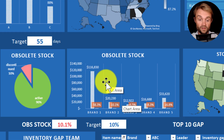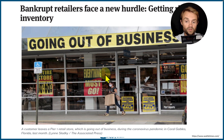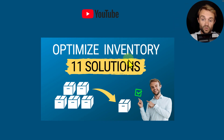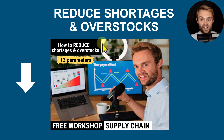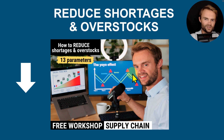Reducing SLOB and improving service is one of the biggest supply chain challenges. Many businesses go bankrupt because they buy too much, accumulate too much obsolete and slow-moving stock, and eventually run out of cash flow. I really recommend checking my YouTube videos on inventory optimization. I also have a free workshop to track supply chain performance and another to reduce shortage and overstock. All links are below the video. Let me know in the comments if you have any questions — give a like, subscribe, and I'll see you soon.